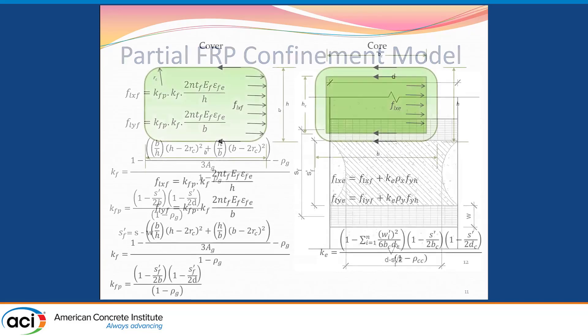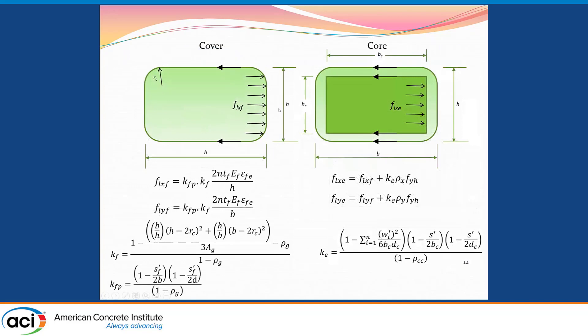Now once we have this expression, we go back to our combined model. The main change here is related to the FRP expressions. We can see that we have our KFP factor, which is added to the lateral pressure equations. Our pressures in X and Y are determined by multiplying the effective area ratio within the cross section and the effective area along the height of the section.